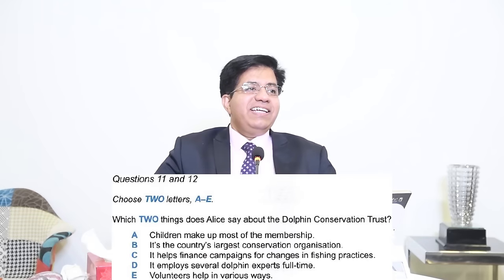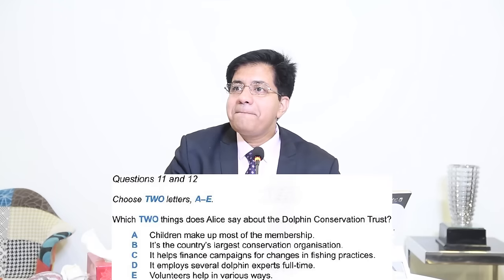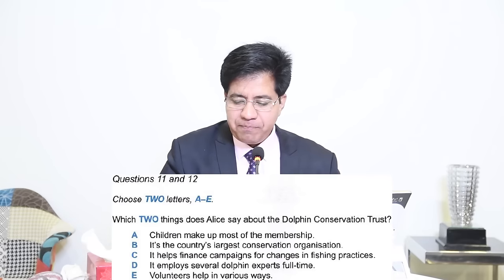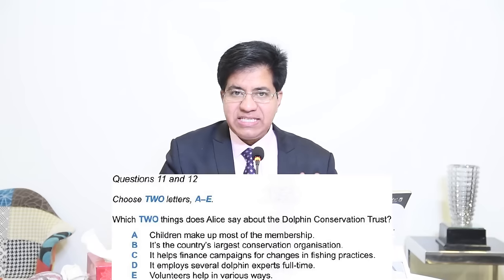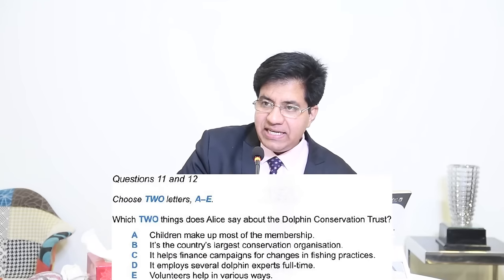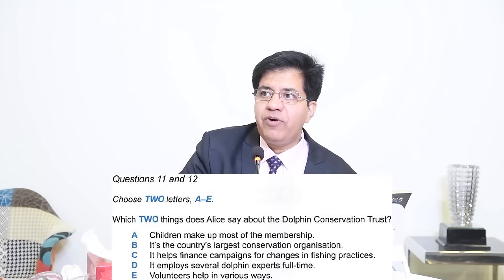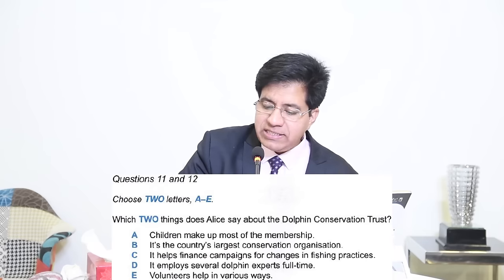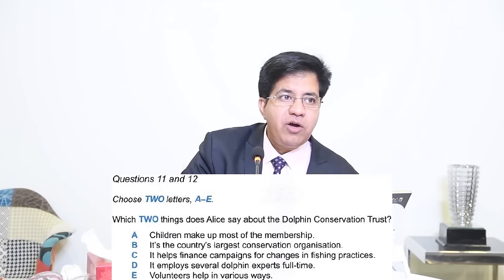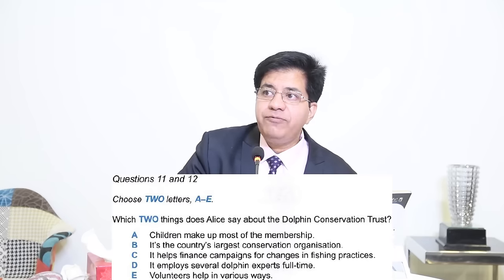'We're particularly proud of the work we do in education — last year we visited a huge number of schools, talking to children aged 5 to 18. About 35% of our members are children. The charity uses its money to support campaigns, for example for changes in fishing policy. It hopes soon to employ its first full-time biologist with dolphin expertise. Many people give their services voluntarily — we now have volunteers working in observation, office work, and other things.'